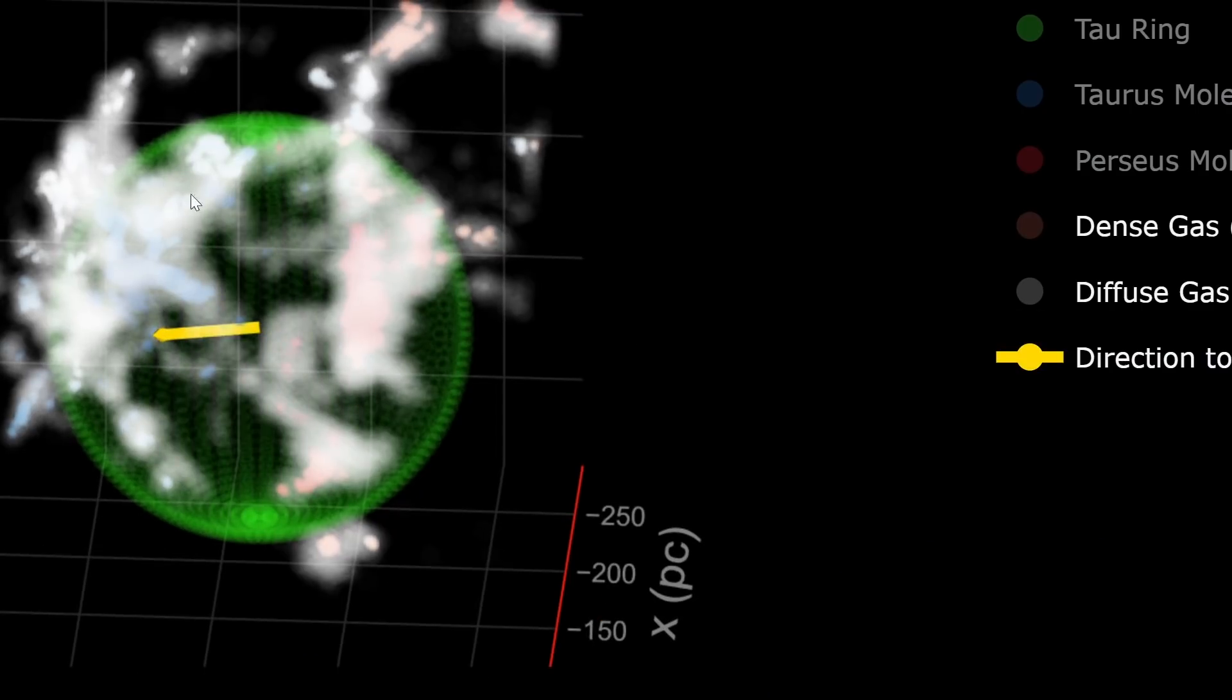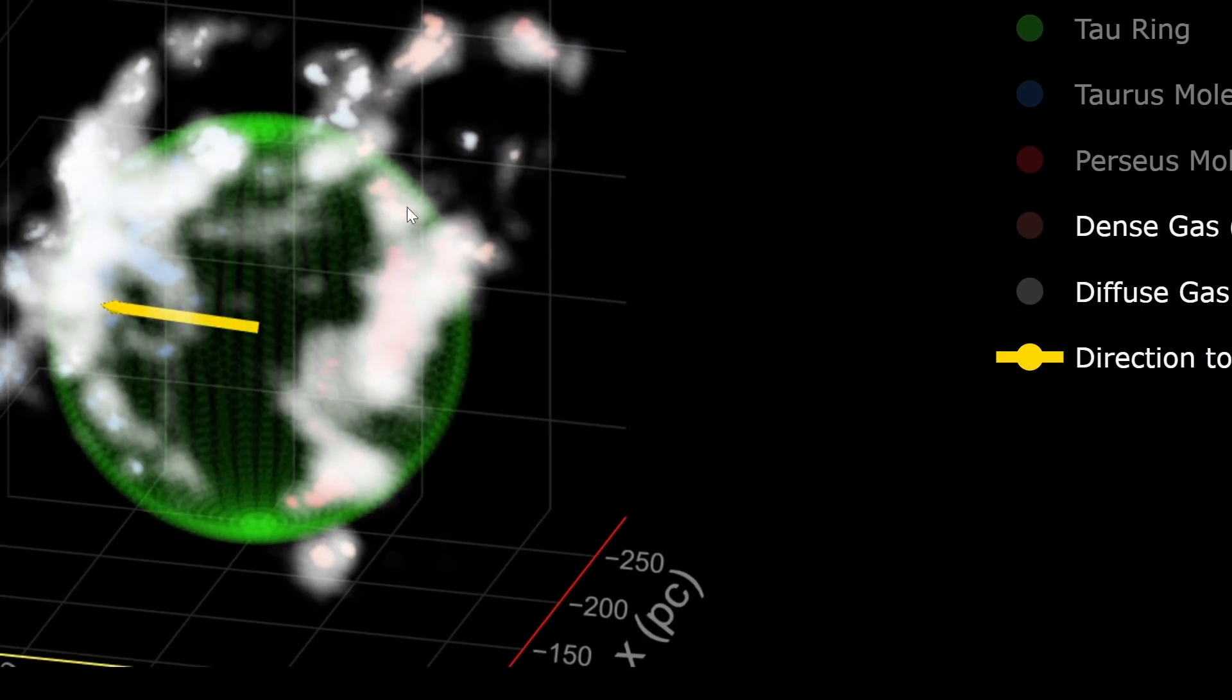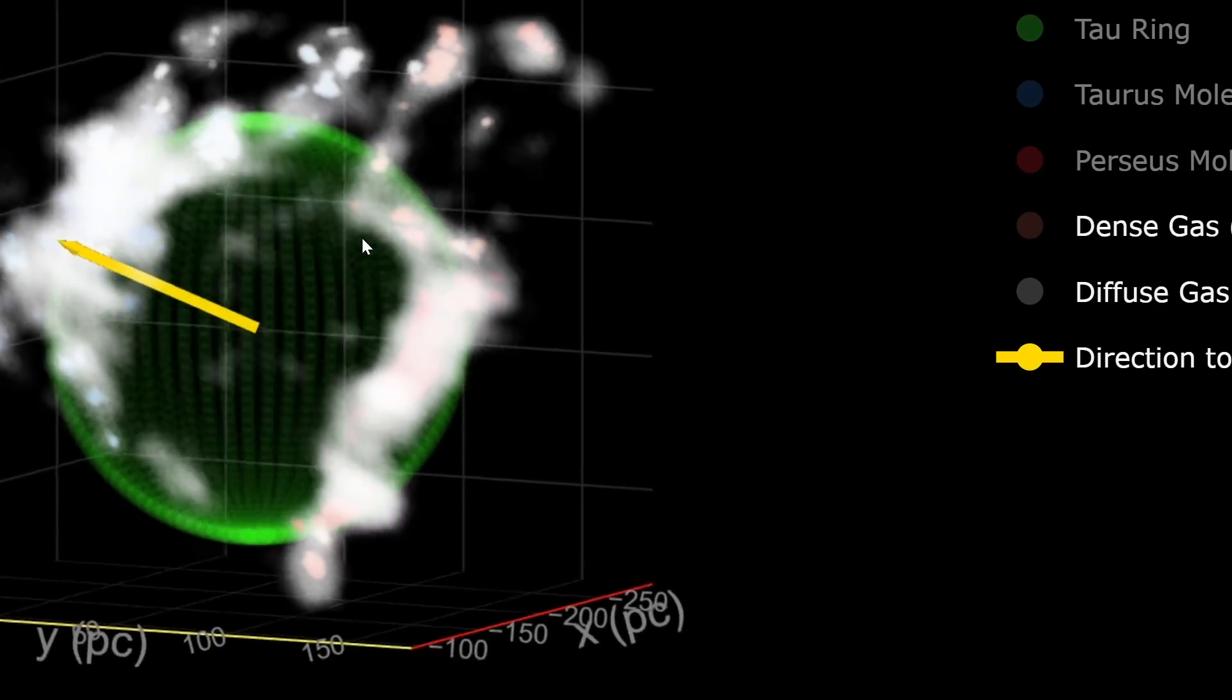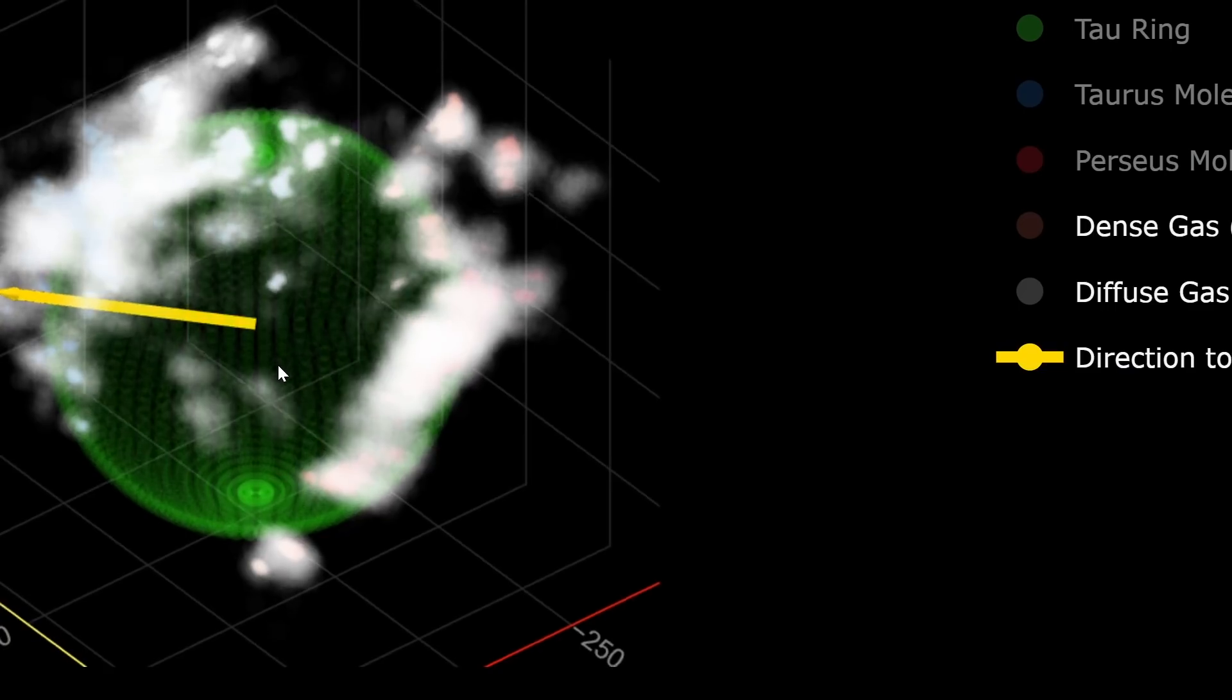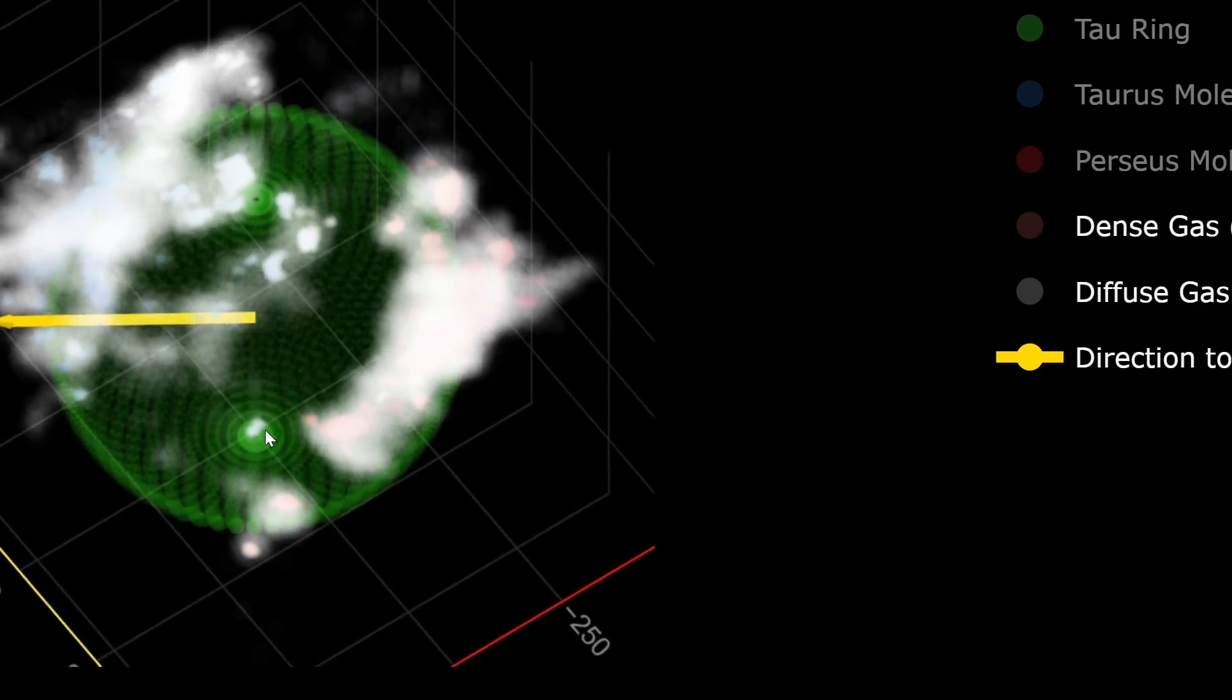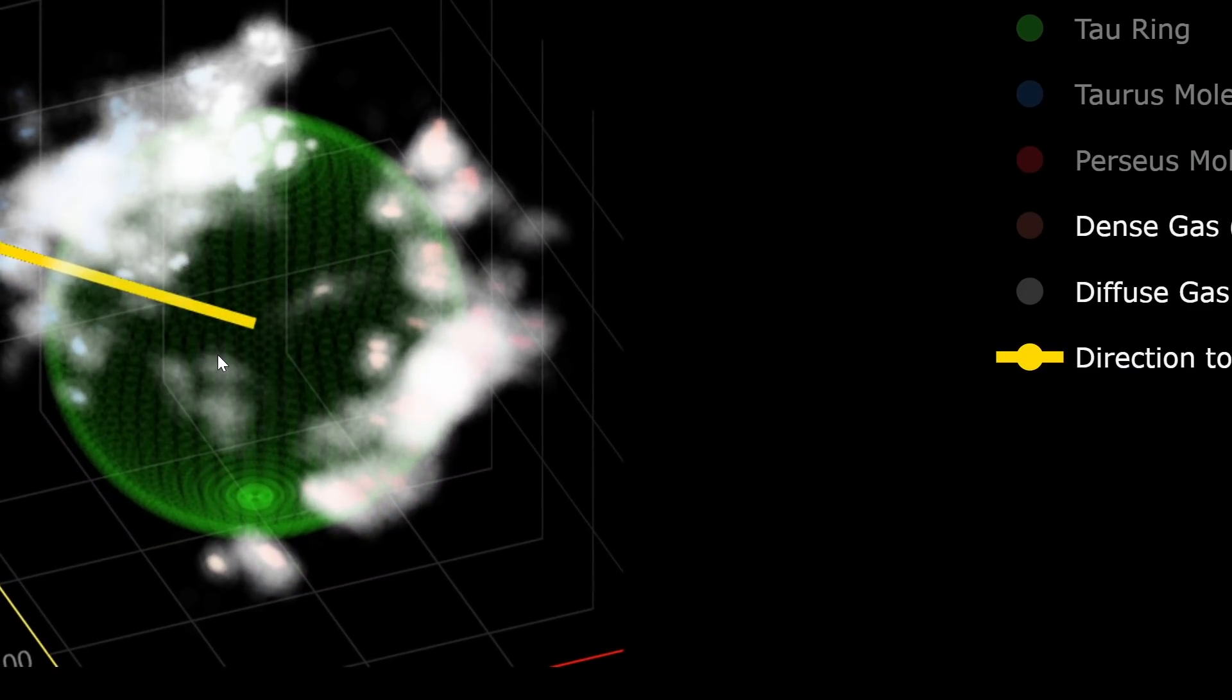A sphere that you can kind of see right here in this beautiful simulation created by the scientists. So essentially this right here is the Taurus cloud whereas this is the Perseus cloud and right between them there's basically nothing for hundreds of light years, but at the same time it seems to be somewhat spherical in shape. And this is the formation the scientists are currently referring to as the Perseus Taurus super shell. But what exactly is this and how exactly was it formed?